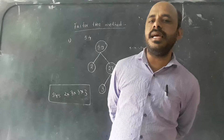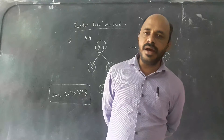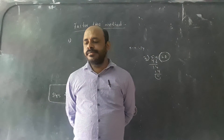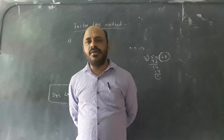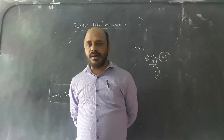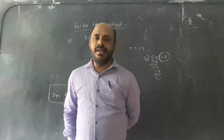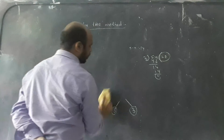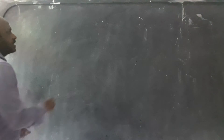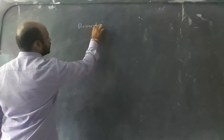Okay, now the second one is the division method. In this division method also, the same idea: we have to write one composite number as the product of all the prime numbers. One example I will explain and you will get one idea — easily you will understand. First, factor tree method is over. Now second one is the division method. In prime factorization, the second method is the division method.